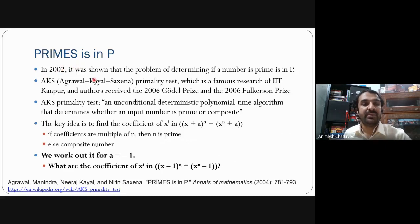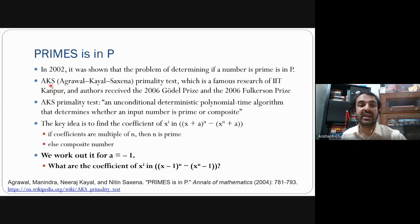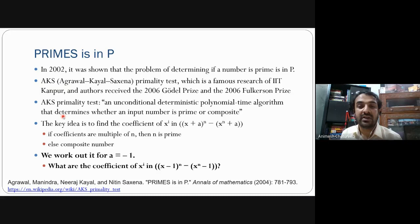PRIMES is in P is the title of a research paper published by AKS — Agrawal, Kayal, and Saxena. In 2002, they showed that the problem of determining if a given number is prime can be solved in polynomial time. This famous AKS primality test was developed at IIT Kanpur, and the authors received the Gödel Prize and Fulkerson Prize in 2006. It is defined as an unconditional deterministic polynomial time algorithm that determines whether a given input number is prime or composite.